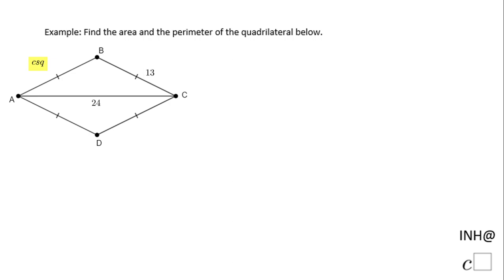Welcome back to Math Help at C squared. In this example we have a rhombus. Why do we have a rhombus? Because look at here, all these sides are congruent, so this quadrilateral is a rhombus.